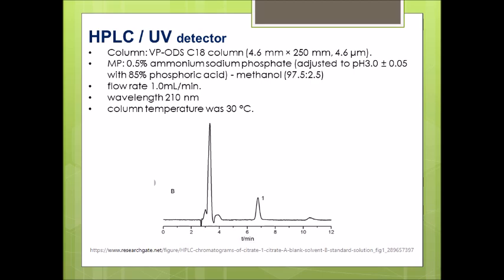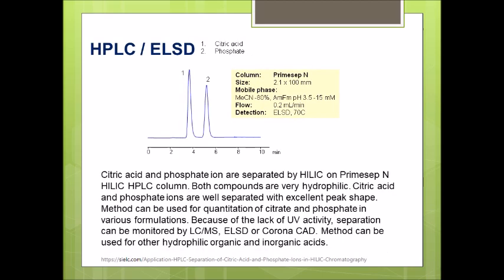There is another method, this time the detector is ELSD. Once again it's a similar concept using acidic mobile phase to convert the citrate into citric acid, but in this chromatogram that we see in this slide your detector is ELSD.